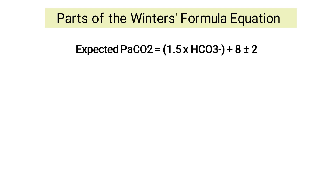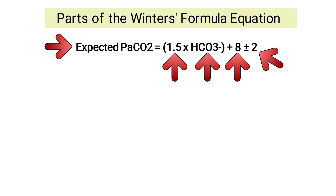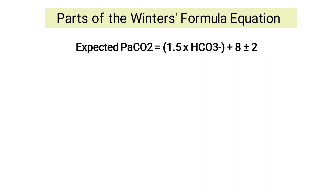Now let's go into more detail about the parts of Winter's formula. The formula is as follows: expected PaCO2 is equal to 1.5 times the bicarb plus 8, plus or minus 2. The equation includes the following parts: the expected PaCO2, bicarb, the 1.5 constant, the 8 constant, and the plus or minus 2 constant.